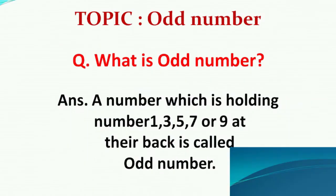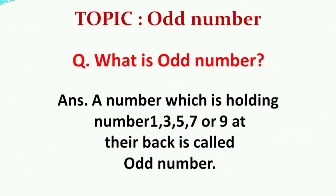Hello friends, welcome to my YouTube channel. So friends, today's topic is odd numbers. Question: What is an odd number? Answer: A number which is holding the number 1, 3, 5, 7, or 9 at their back is called an odd number.